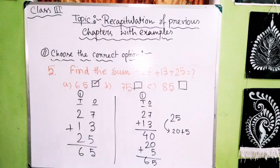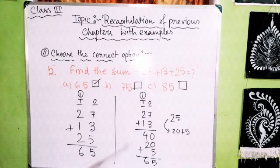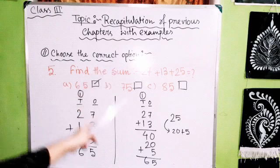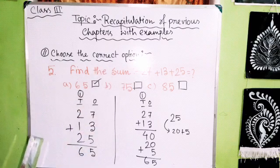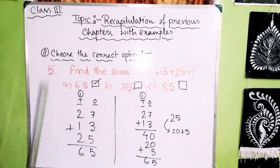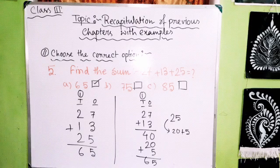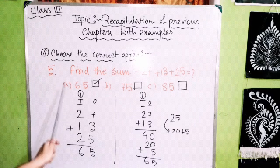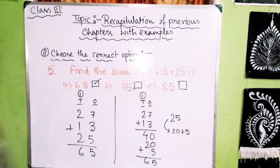We can expand 25 as 20 plus 5. Then 40 plus 20 equals 60, and 60 plus 5 equals 65. This method gives the answer much faster than the traditional method. So our answer is Option A: 65.